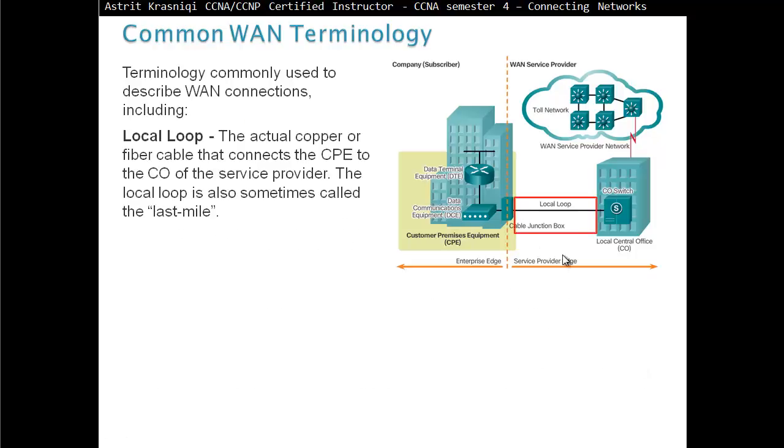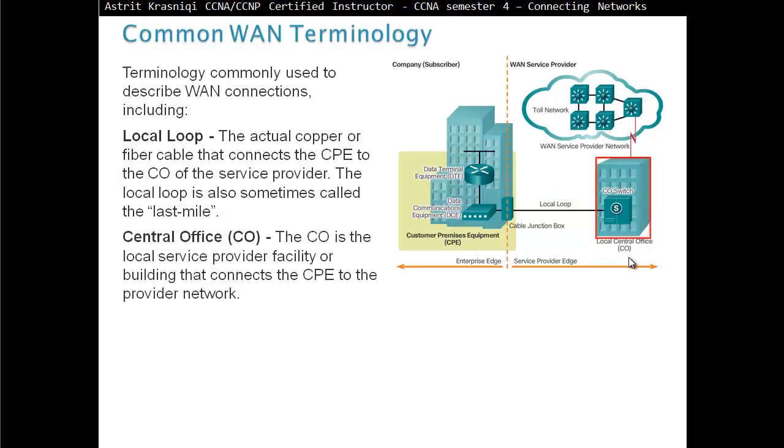Local Loop, the actual copper or fiber cable that connects the CPE to the CO, to the central office of the service provider. Central office, the CO, is the local service provider facility or building that connects the CPE, customer premises equipment, to the provider's network.